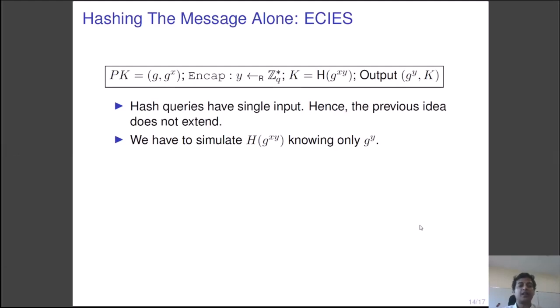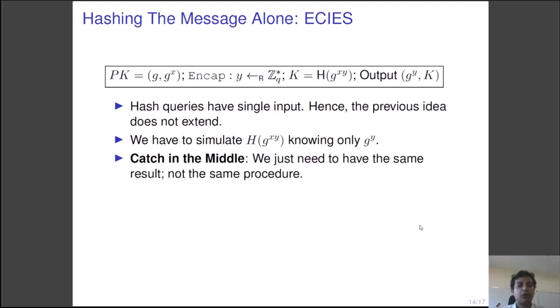Finally, we come to the ECIES version of hashed ElGamal. Here, unfortunately, none of the previous ideas work. The reduction simply cannot get g to the power y from g to the power xy. So none of the trick of map-then-PRF idea works here. The challenge here is to simulate or produce h of g to the power xy in the decapsulation oracle simulation knowing only g to the power y. However, we observe that we just need to produce the same result, and it is not needed for the reduction to follow the same procedure as in the decapsulation oracle simulation as it did during the hash oracle simulation.